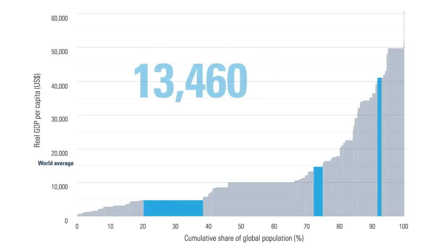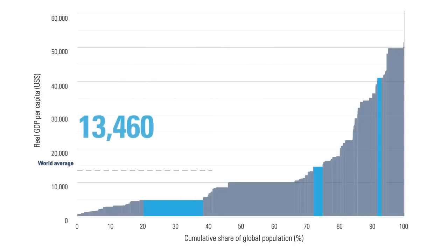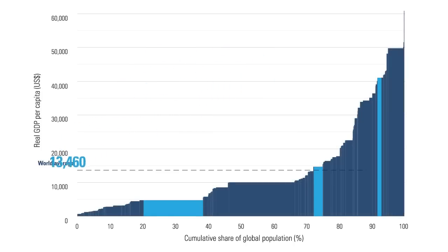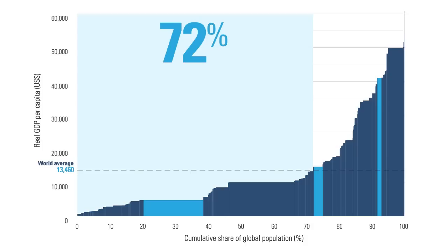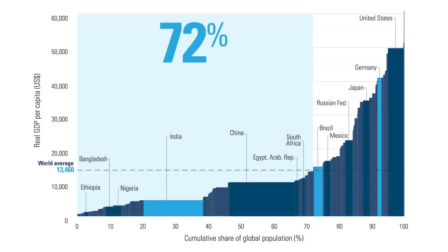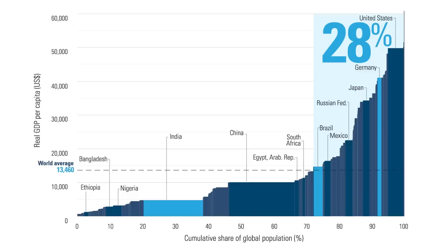The line for the world average GDP per capita in real terms is $13,460. It hits the bar at around 72%, which means about 72% of people live in countries whose average GDP per capita is below the world average. About 28% live above.